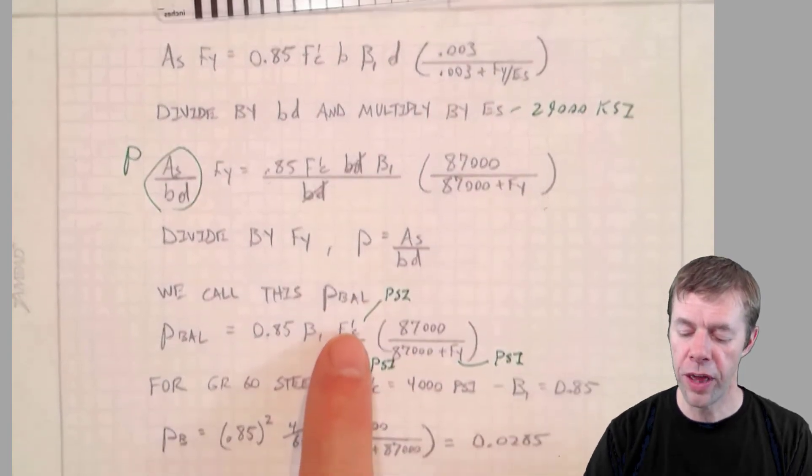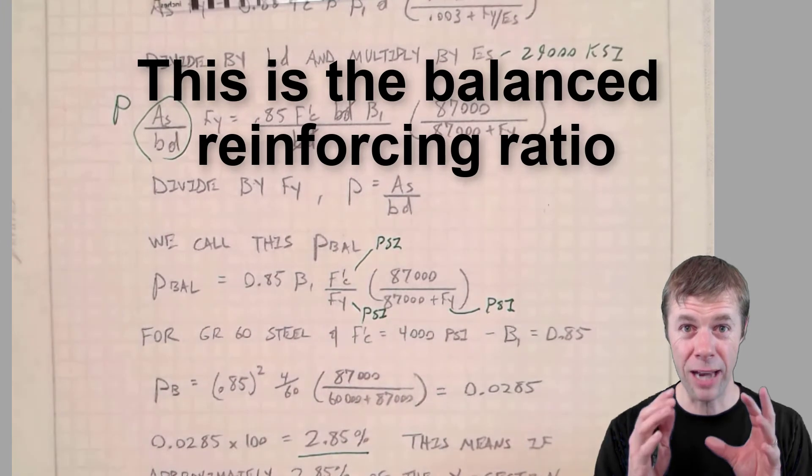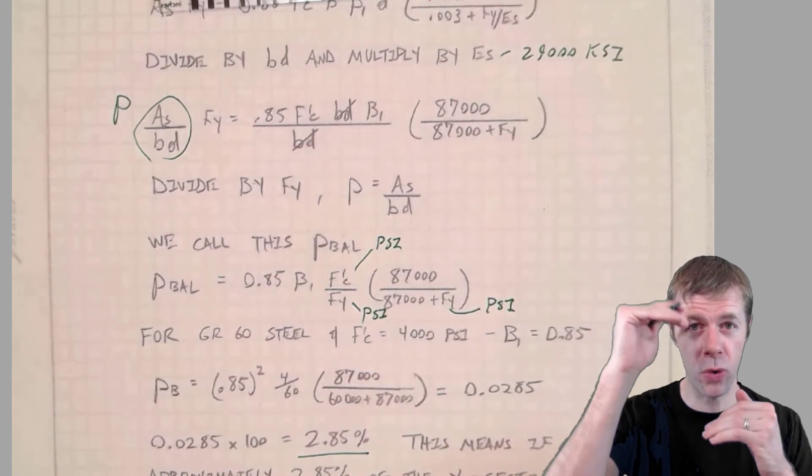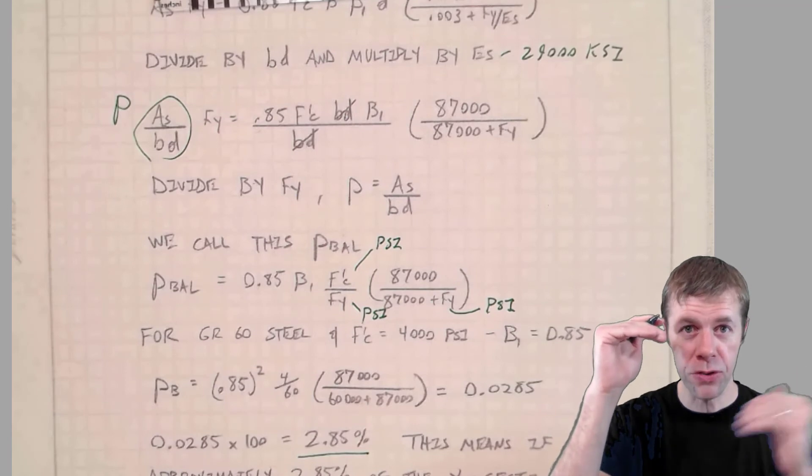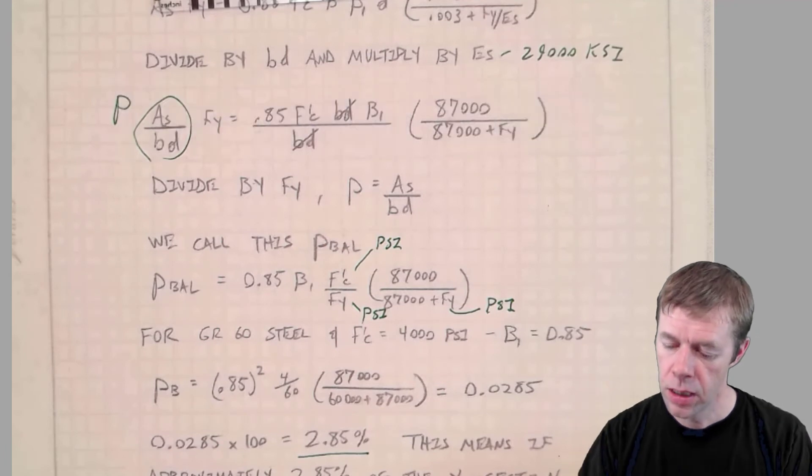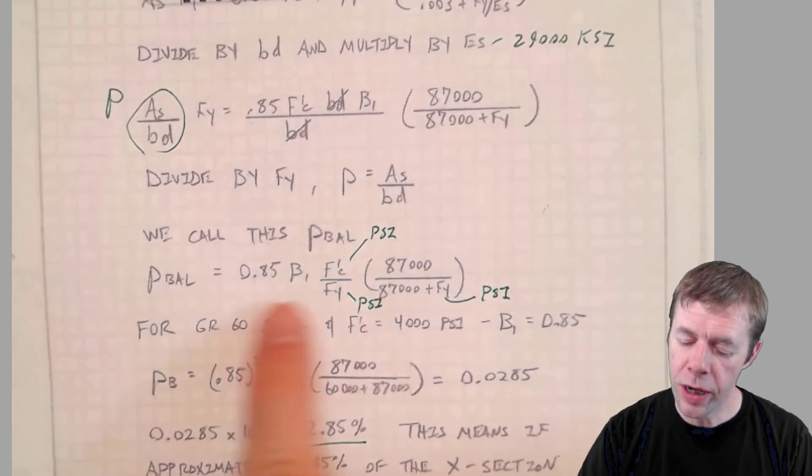And we're going to simplify rho is equal to AS divided by BD. And we're going to call this whole thing equal to rho balance because that is this mythical place right when the concrete fails in compression, right when the steel starts to yield. But it's not what we want. It's not ductile. So we find this big equation.